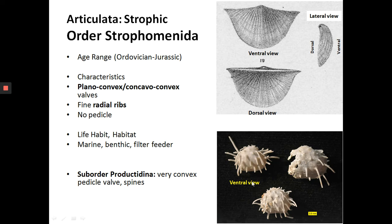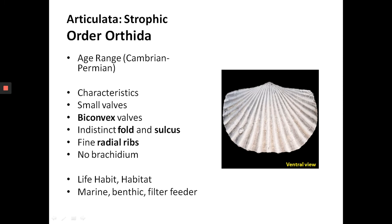Here are better views of productid brachiopods — very convex pedicle valves with lots of spines. The next group is Order Orthida, also an ancient lineage ranging from the Cambrian to the Permian. These are strophic brachiopods with a straight hinge line and tend to be very small. They have biconvex valves with a fold and sulcus — subtle, not as distinct as in spirifers. In well-preserved shells you can see the insides, but there is no brachidium — this is an ancient group. Life habit: marine benthic filter feeder.